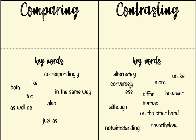When we're talking about comparing and contrasting, we need to make sure that we know what those words actually mean, because very often people misuse them. Comparing means that you're showing how things are alike, similar, or the same. We have some keywords that help us do that: correspondingly, both, as well as, also, in the same way, and many others.